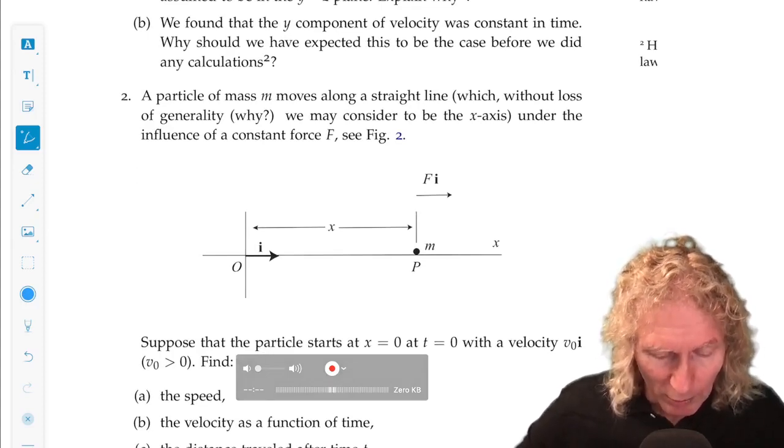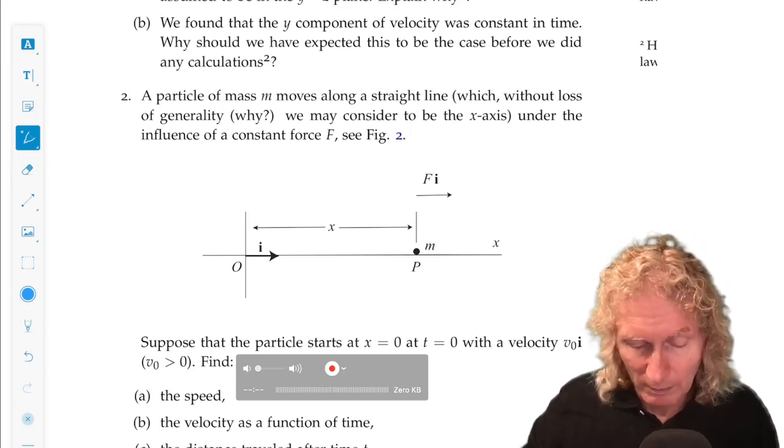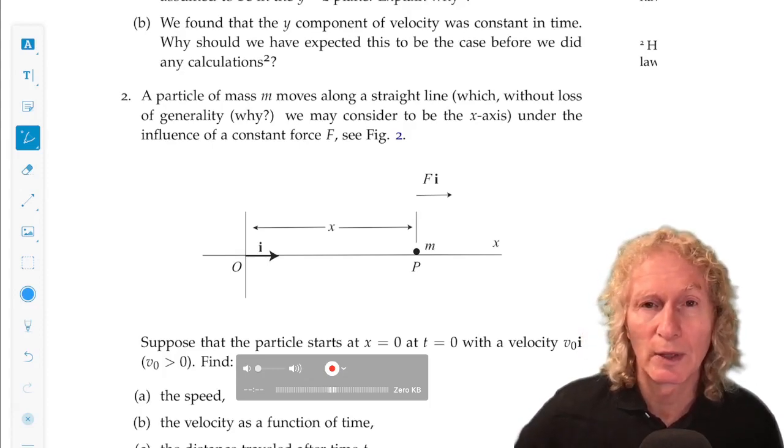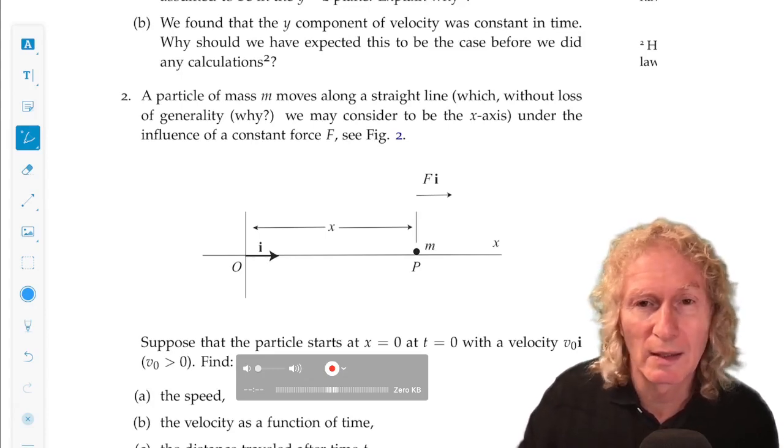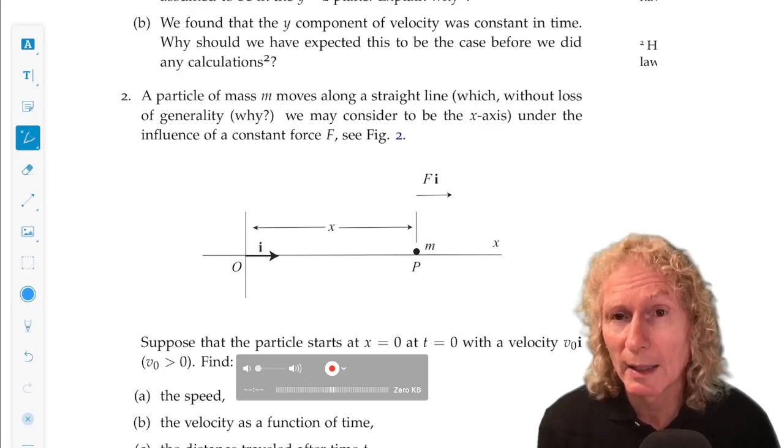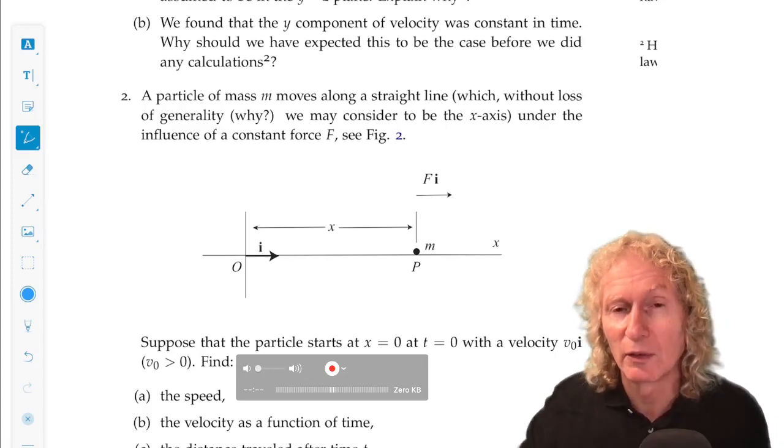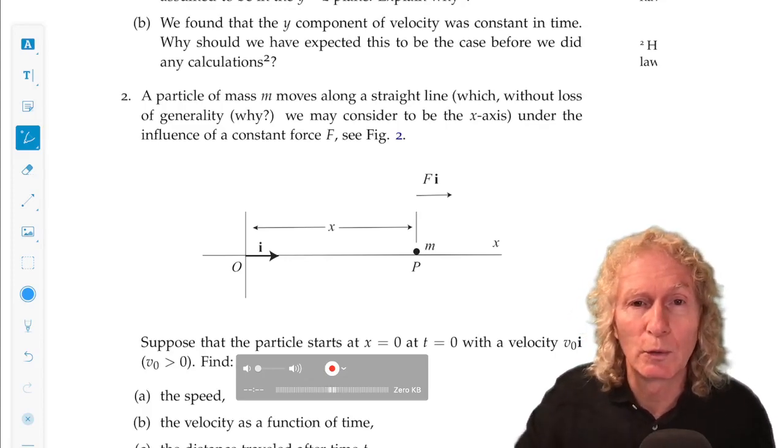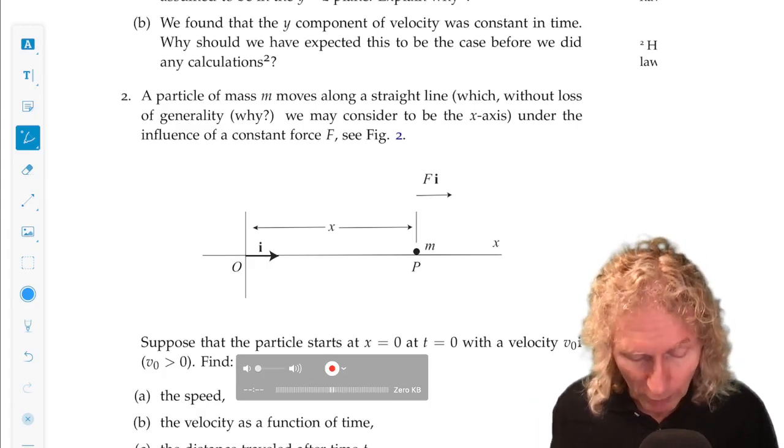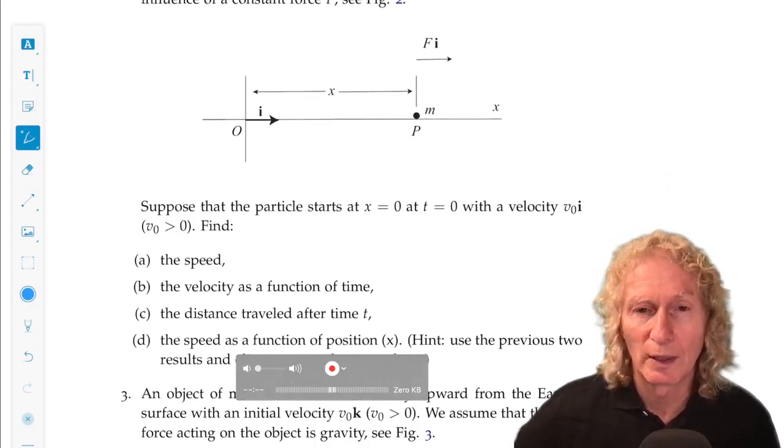The second problem: a particle of mass m moves along a straight line. That's what you're told. It has a constant force acting on it. We know that if it moves along a straight line, the force has to be acting in that line. It can't be acting sideways or up or down. It's acting along the line. So we're free to choose whatever line we want as our coordinate system. Let's just choose the i direction, x coordinate. So we can easily set up Newton's second law.